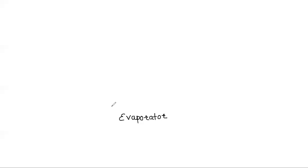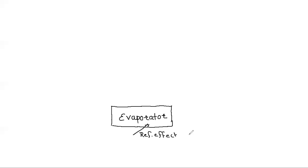Let's look at the basic configuration of a refrigeration system. A refrigeration system involves an evaporator — a heat exchanger — which is responsible for producing the required cooling effect, also known as the refrigerating effect. This is the place where heat is removed from the space to be cooled, and we denote this refrigerating effect as Q_L.